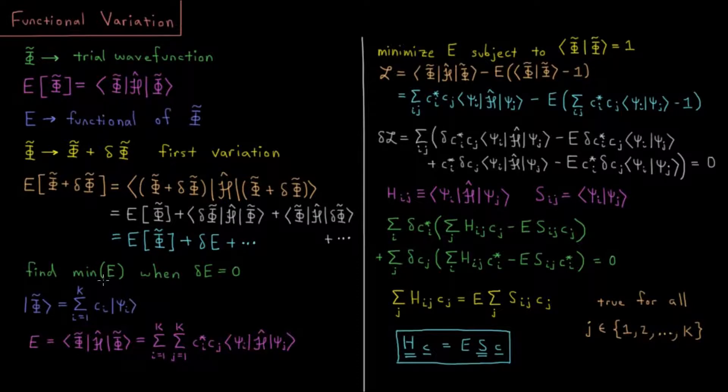To do this we'll assume that we are using some wave function which is a linear combination of some basis set. Our wave function might be a sum over k basis functions of some coefficient times the ith basis function as we're going along this sum.